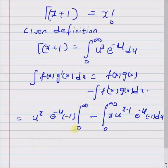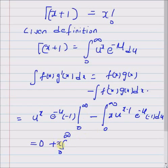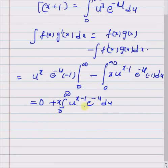The first term is 0, since e^(-infinity) is 0, and inserting 0 gives 1 times 0, which is 0. So we are left with the integral from 0 to infinity of x times u^(x-1) times e^(-u) du, with x brought outside. This integral is nothing but gamma(x), so gamma(x+1) equals x times gamma(x).